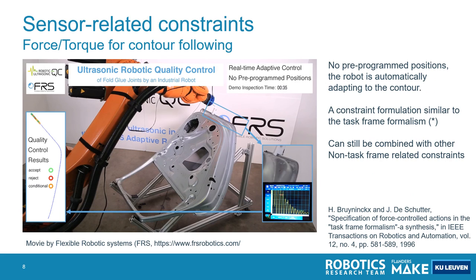Another application is contour-following. Contour-following has a long history from the task-frame formalism and is quite powerful, but it can still be completely formulated within ATASL. This allows us to combine task-frame-style contour-following with other constraints in ATASL that, for example, limit joint velocities or handle other requirements. This example is further elaborated in another keynote in this workshop.